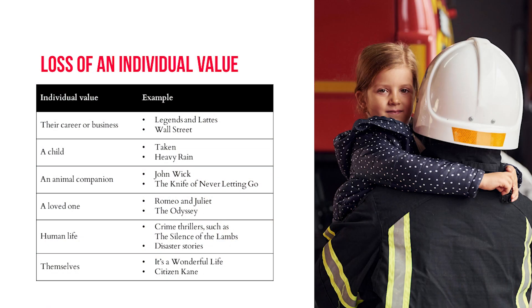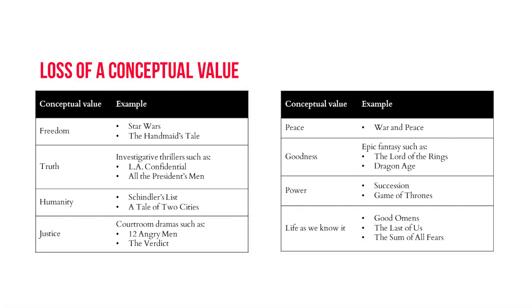The protagonist has placed their bet on the table and they might lose it. This could be the loss of an individual value such as their career or business, a child, an animal companion — I mean who can forget John Wick — a loved one, or human life itself. You see this a lot in crime thrillers as well as disaster stories, and it could be even as existential as losing themselves, as in the case of films like Citizen Kane. Then there's also the threat of the loss of a conceptual value: things like freedom, truth, justice, peace, goodness — all those really big picture concepts. What's really important to know is that conflict always increases the stakes, and the highest stakes are created when these individual values come into conflict with conceptual values.